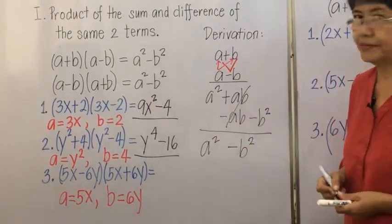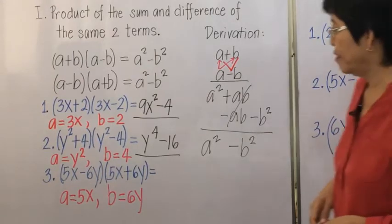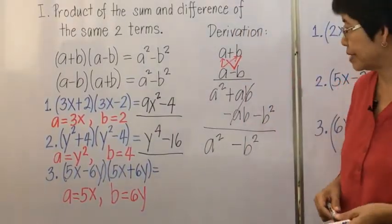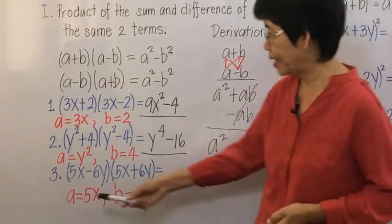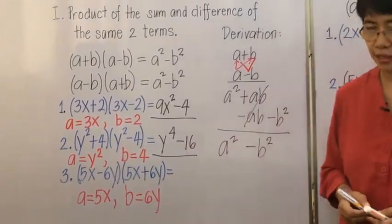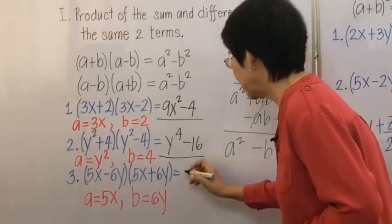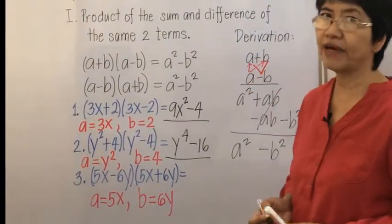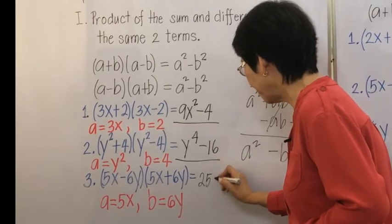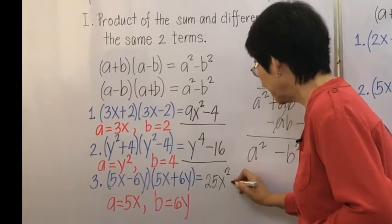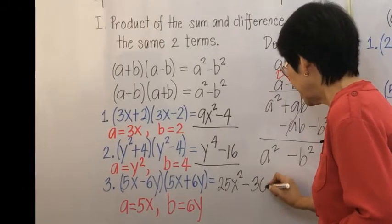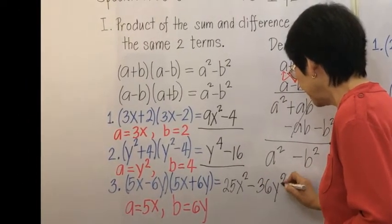Example 3: 5x minus 6y times 5x plus 6y. Here a is equal to 5x and b is equal to 6y. Squaring each term, 5x squared is 25x squared, and 6y squared is 36y squared. So the answer is 25x squared minus 36y squared.